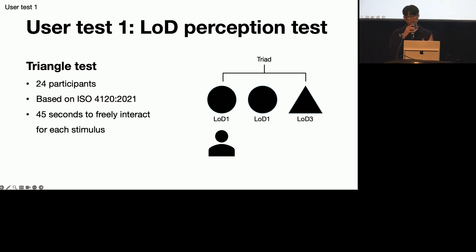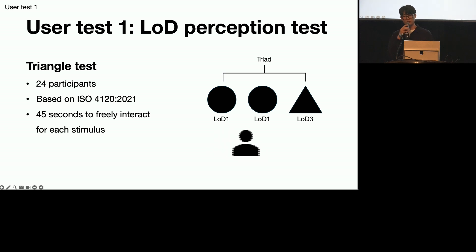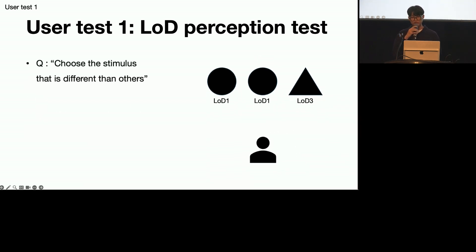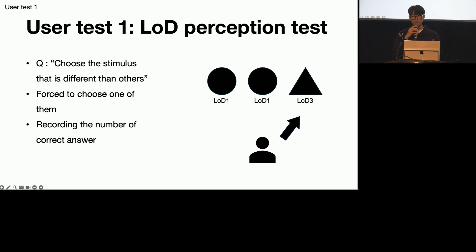We recruited 24 participants and performed the ISO 4120:2021 method named the triangle test. One trial consists of three stimuli called a triad — two stimuli had the same LOD, and one was different. One of four LOD levels was set for each stimulus. Participants were given 45 seconds for each stimulus to freely interact without a specific goal, then asked to identify which stimulus had a different LOD. They were forced to choose one even when the stimuli were indistinguishable, and the number of correct answers per trial was recorded.